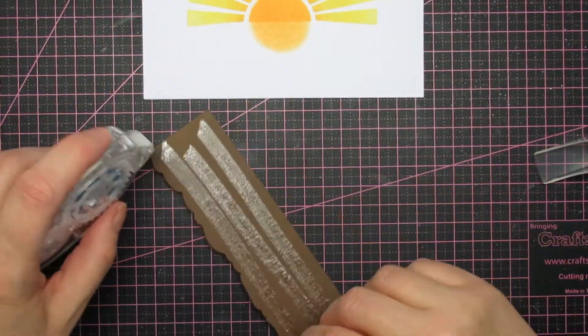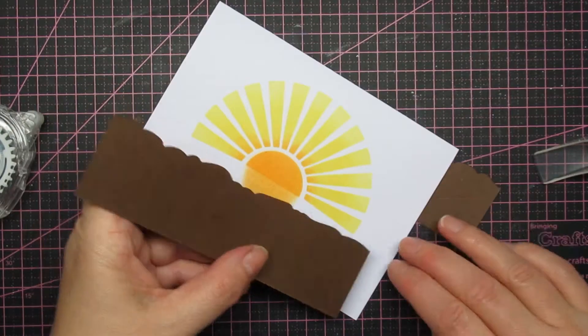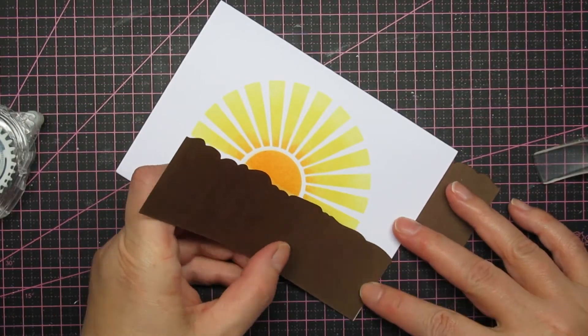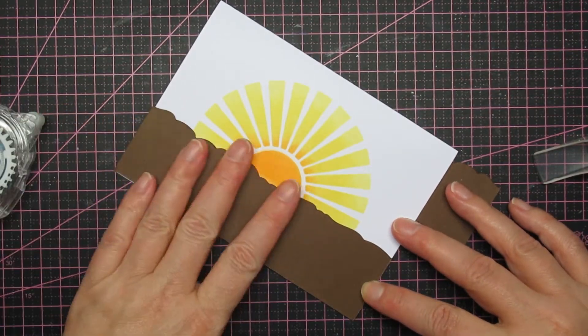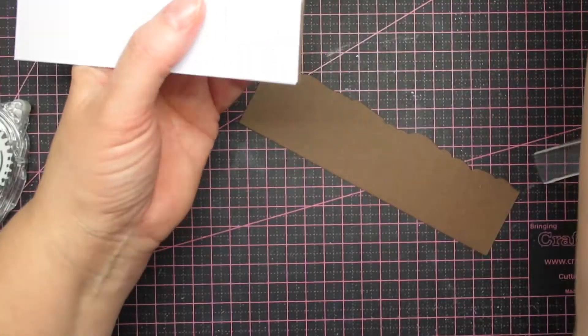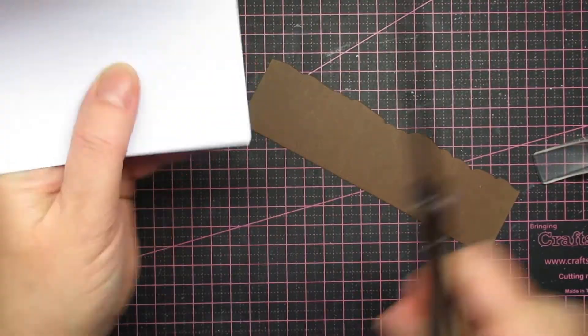The first layer I'm just mounting it flush, and this paper is a little bit bigger so I just trim off the excess for all three levels.